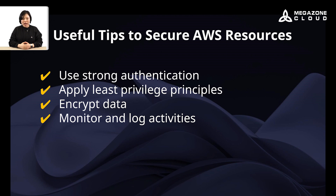So far, we have gone through the AWS security services. Now let me share some useful tips to secure your AWS workloads. First, consider using strong authentication. You can add an extra layer of protection by implementing multi-factor authentication for user accounts to prevent unauthorized access. Avoid using the root account as it has complete control over the account and its resources. Second, apply least privileged principles — grant only the necessary permissions to AWS resources, and regularly review and update permissions to minimize potential security risks.